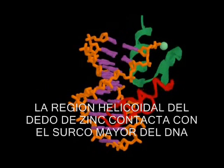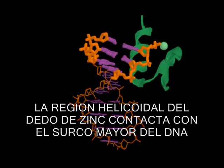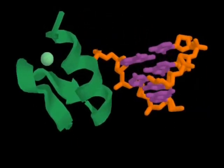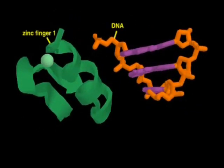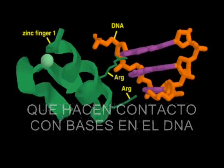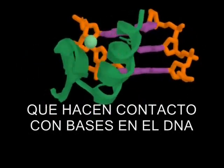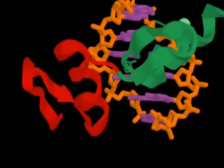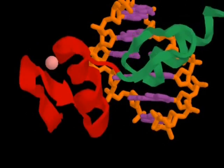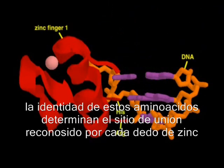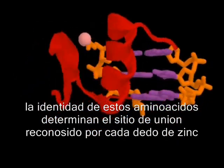The helical region of each zinc finger rests in the major groove of the DNA. Amino acid side chains project out from the helix and contact bases in the DNA. The identities of these side chains determine the precise DNA sequence recognized by each zinc finger.